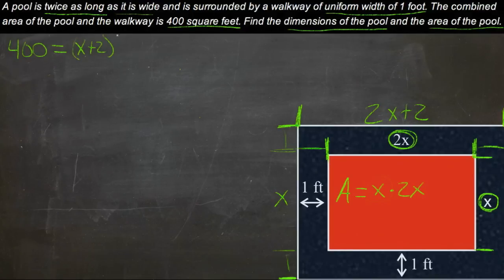times 2x plus 2. So that was the total length, 2x plus 2 times the total width. So the total area is the total length times the total width.